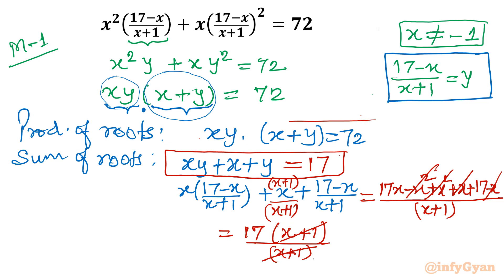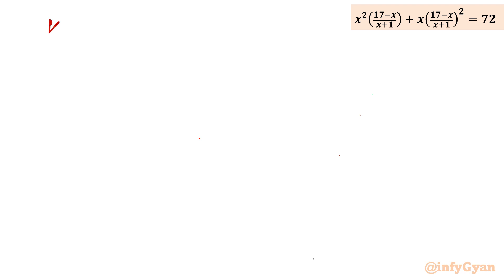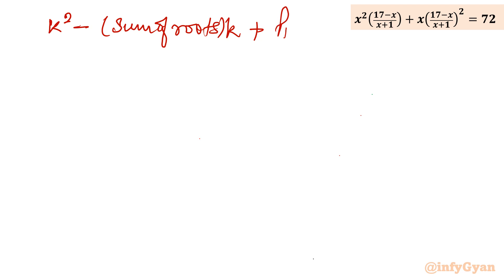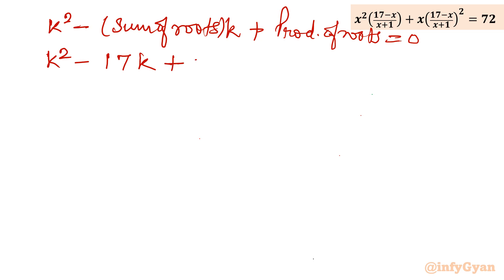Now we know the sum of roots is 17 and the product of roots is 72. So I will frame one quadratic equation whose sum of roots is 17 and product of roots is 72. The equation is k² minus 17k plus 72 equals 0.